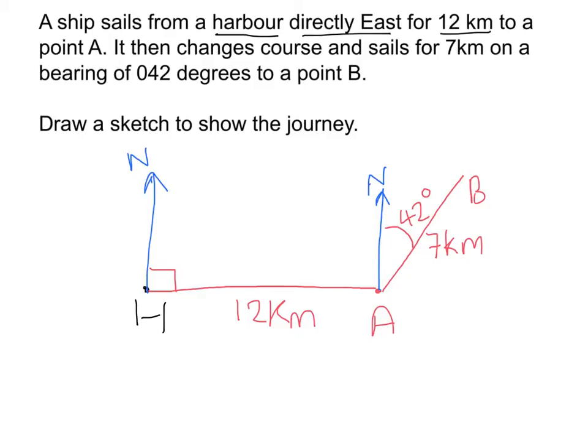What usually happens with these questions is that you then make the diagram into a triangle. For example, the ship might be at B and they might ask what bearing it goes on to get back to H, in which case you draw a line from B across to H to make a triangle, and then use your trigonometry rules.